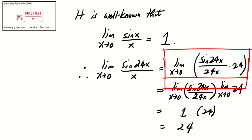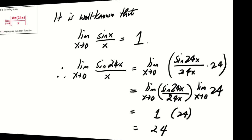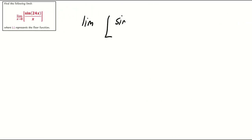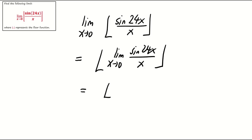Remember, the limit of the product of functions is the product of their individual limits if each exists. Because of this, many mistakenly conclude that the limit of the floor function equals the floor of the limit, giving the answer 24.